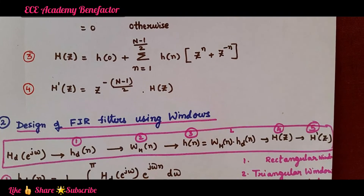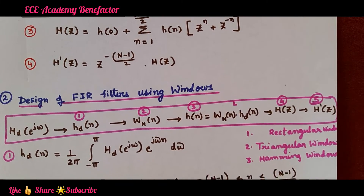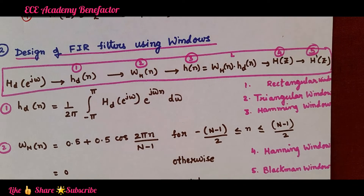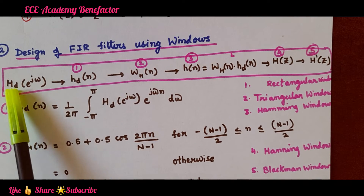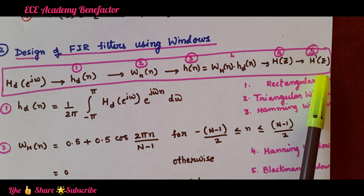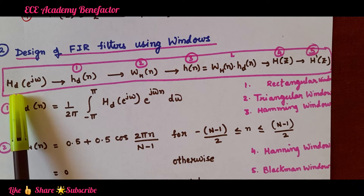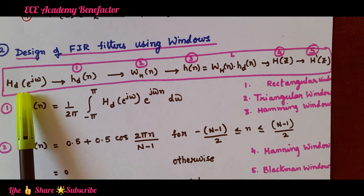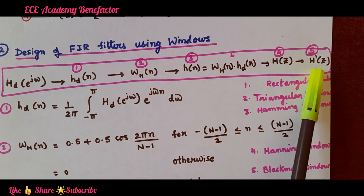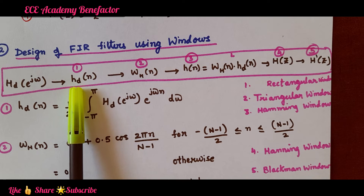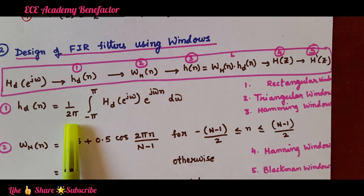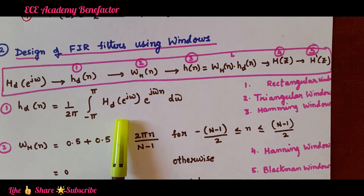Coming to the next topic: design of FIR filter using windows. Here, design means finding the transfer function H(z). What is given in the question is the desired frequency response H_d(e^(jω)), and we need to find the transfer function. The first step, as before, is computing h_d(n), the desired impulse response, using the formula: (1/2π) ∫ from −π to π of H_d(e^(jω)) · e^(jωn) dω.